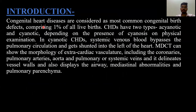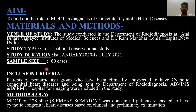Introduction. Congenital heart diseases are considered the most common congenital birth defects, comprising around 1% of all live births. CHDs have two types — acyanotic and cyanotic — depending on the presence of cyanosis on physical examination. In cyanotic CHDs, systemic venous blood bypasses the pulmonary circulation and gets shunted into the left side of the heart. MDCT can show the morphology of extra-cardiac vasculature, including the coronaries, pulmonary arteries, aorta, and pulmonary or systemic veins, and it delineates vessel walls and displays the airway, mediastinal abnormalities, and pulmonary parenchyma.